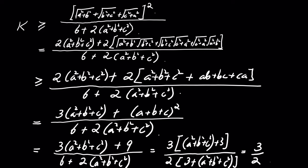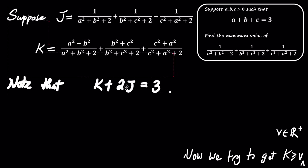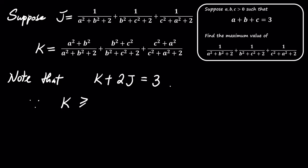This is the refined lower bound for K. Now that we have a refined bound for K, let's substitute it into our equation for K plus 2 times J equals 3. Since K is greater than or equal to 3 over 2, we can solve for J. J equals 1 over 2 times 3 minus K, which is less than or equal to 3 over 4.